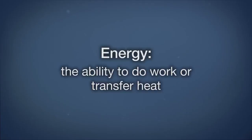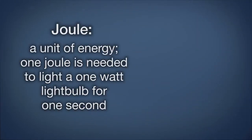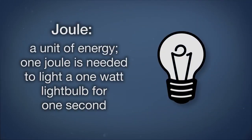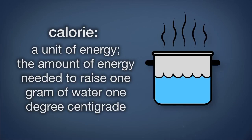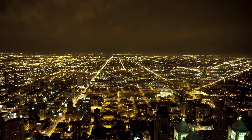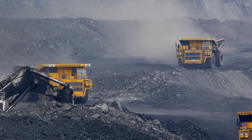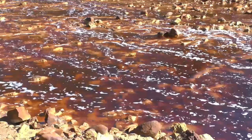Energy is the ability to do work or transfer heat. Understanding energy is a real challenge and a key to understanding environmental science. Energy is measured in joules, which is the amount of energy a one-watt light bulb uses in one second. Another unit of energy is the calorie, which is the amount of energy needed to raise one gram of water one degree centigrade. The use of energy has led to many benefits to human society, and it has also led to a great deal of environmental degradation. Energy is so important that we will spend almost a third of this course examining it.